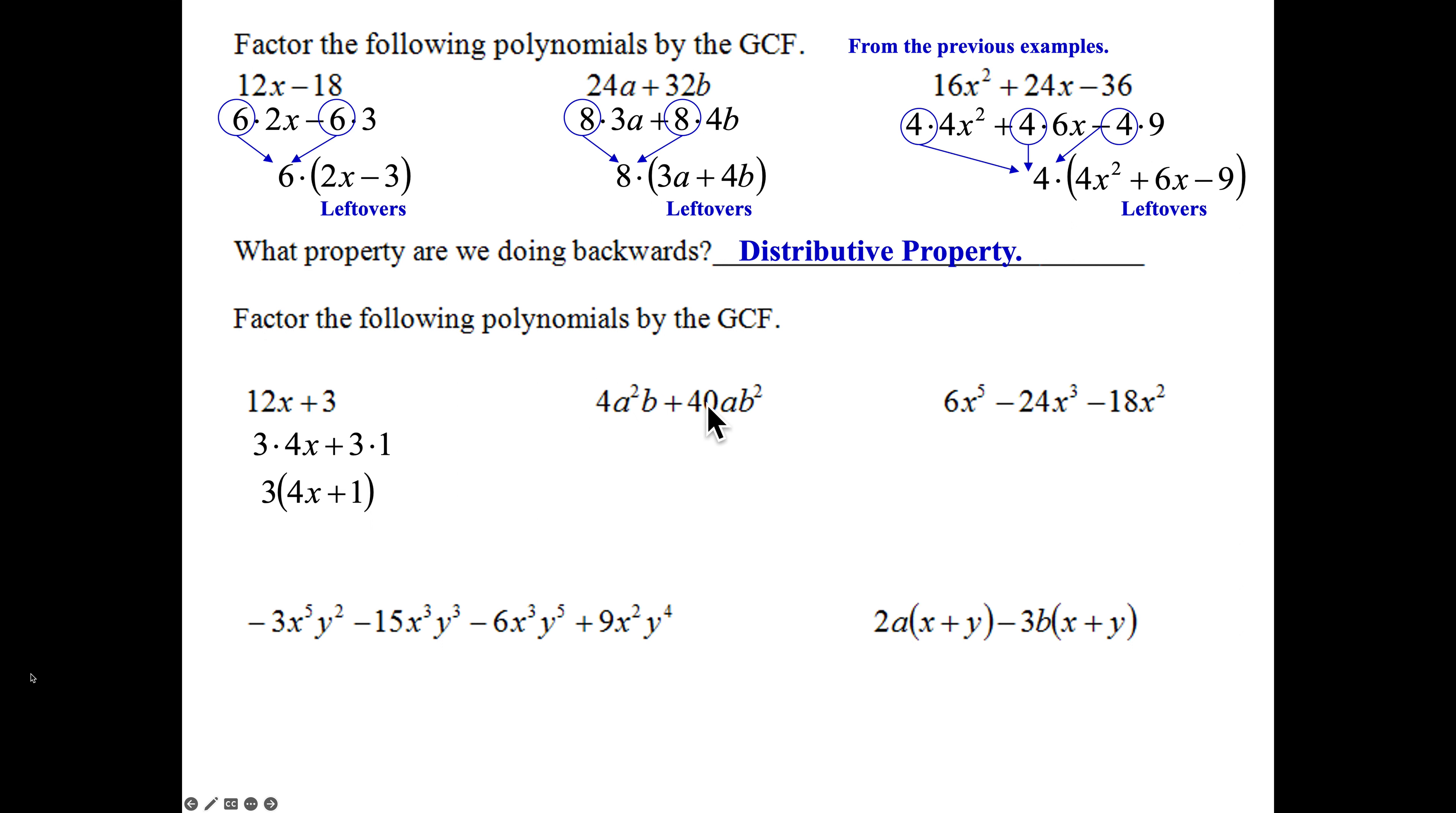4a²b plus 40ab². Now we have variables here that can be the GCF. So, to do the variables, we're going to break this down as 4ab times an a, 4 times ab times 10b. There is an a and a b in each term. What makes the variable a GCF factor is the variable to the smallest power. That way we know it divides into both terms evenly. So, here's b to the first. There's your a to the first. They're part of my GCF. So, always, when you have a variable in your GCF, it's always to the smallest power. So, 4ab out front. a and a plus 10b. My leftovers in the parentheses.